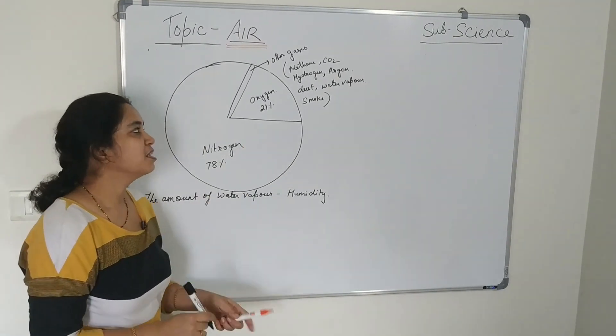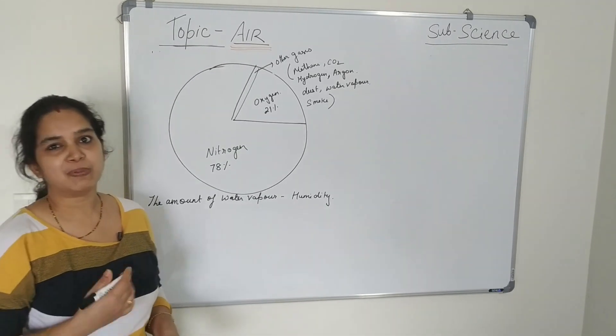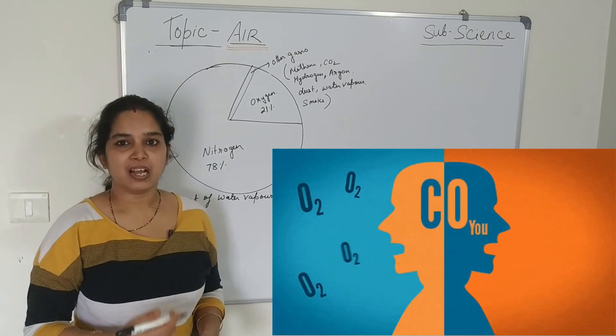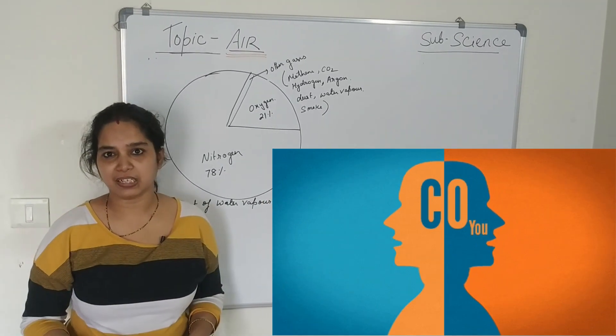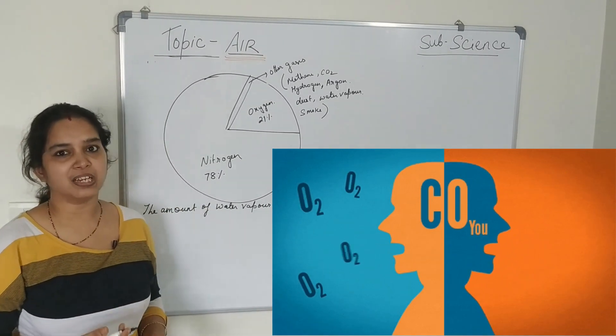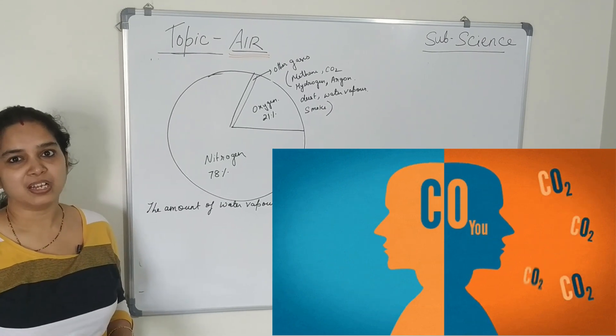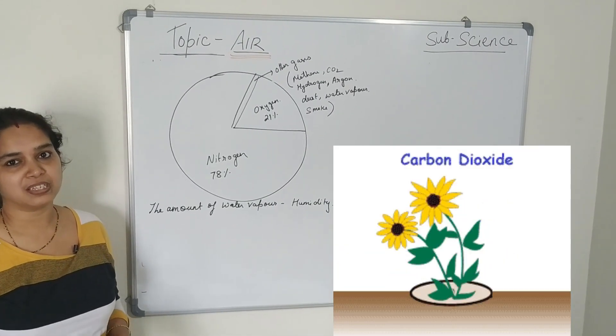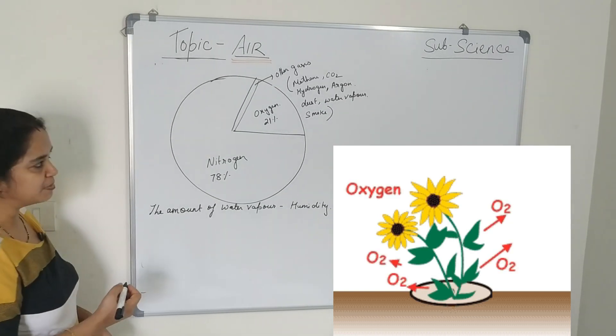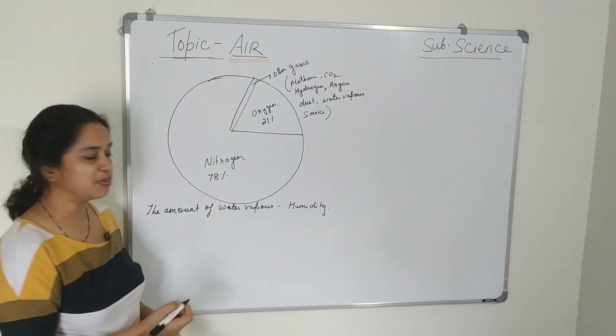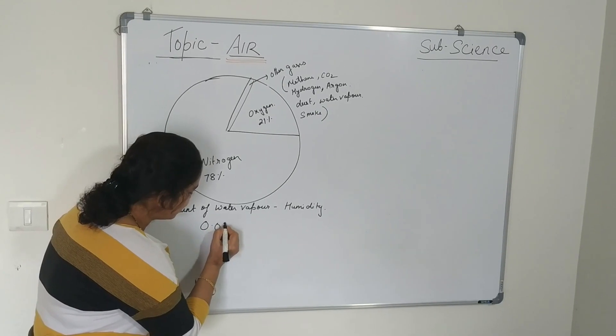So the oxygen that is present in the air is used by the plants, animals and also the human beings for the respiration. Plants generally respire during the night time. And during the day time, they use carbon dioxide for making the food. That is in the process called photosynthesis. You might be very surprised that carbon dioxide present in the air is only 0.03%.